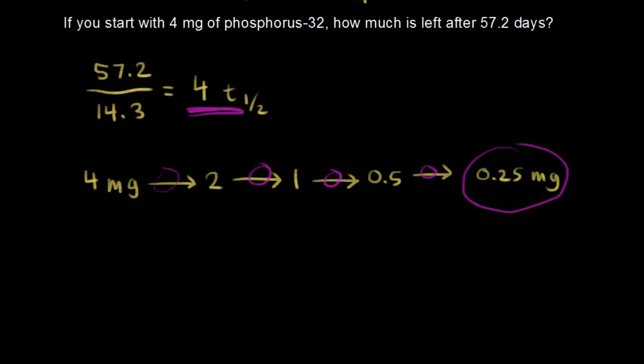Another way would be starting with four milligrams. We need to multiply that by one-half, and that would give us two. We multiply by one-half again, and one-half again, and one-half again.